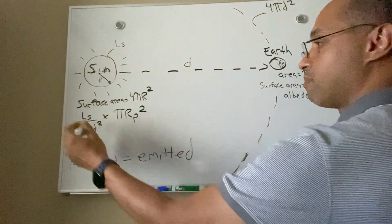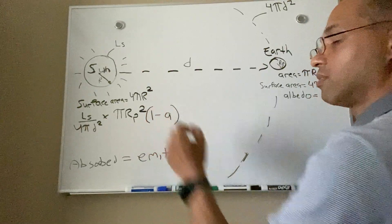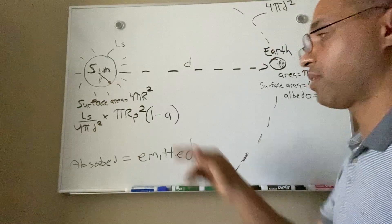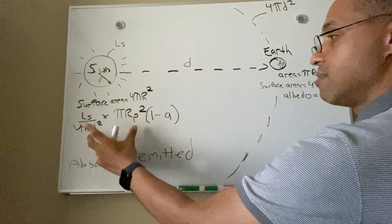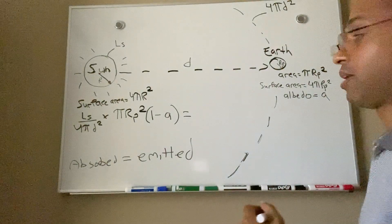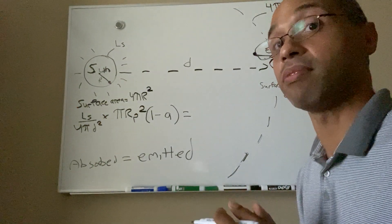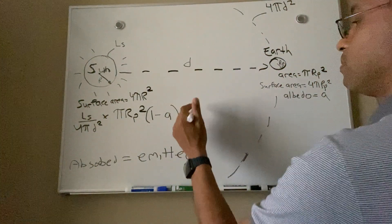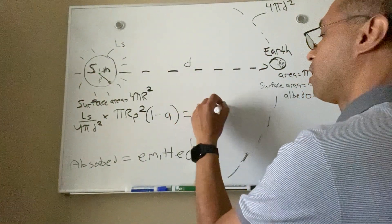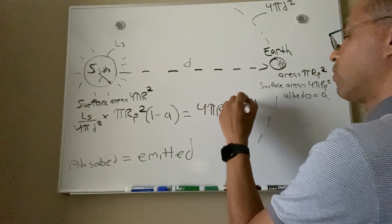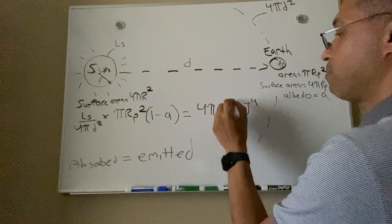So the power received at Earth's location from the sun is multiplied by (1 − a): in Earth's case a = 0.3, so that factor is 0.7, but we'll keep variables. This absorbed term must equal the emitted energy. Just as stellar luminosity is 4π·r²·σ·T⁴, the Earth also emits across its entire surface: 4π·r_p²·σ·T⁴. Now we can begin canceling terms — the π·r_p² terms cancel from both sides.